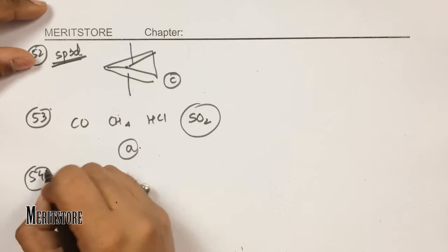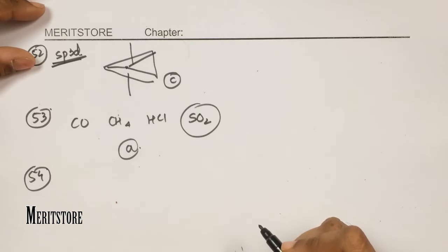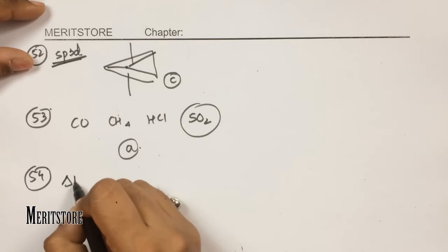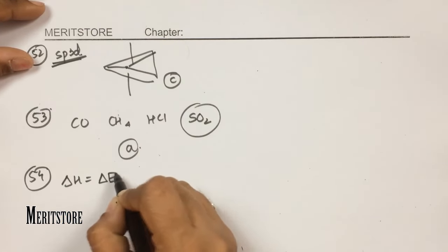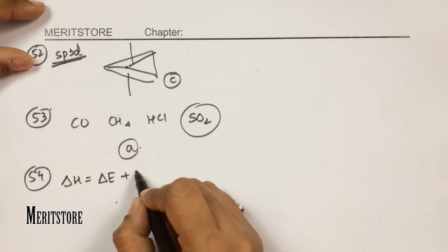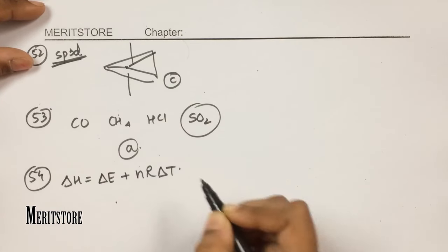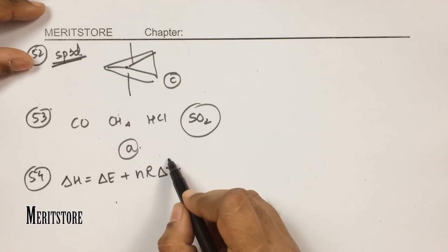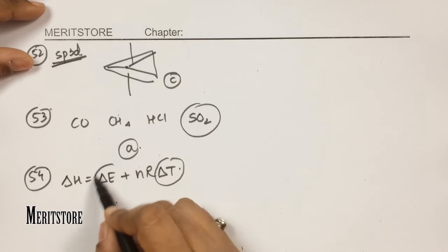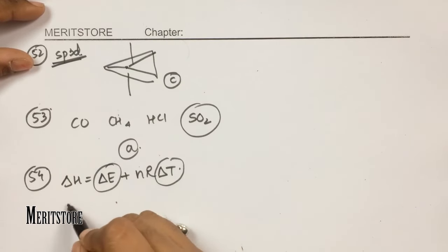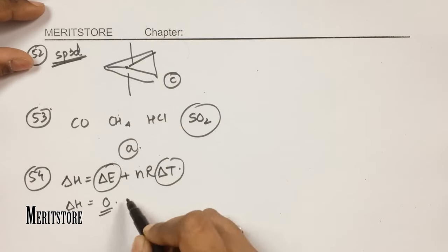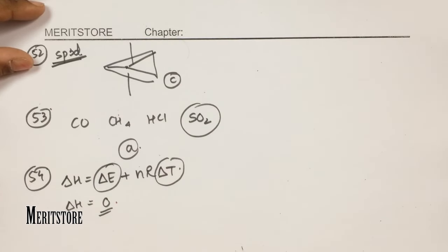Question number 54: 2 moles of ideal gas is expanded isothermally and reversibly from 1 litre to 10 litres at 300 K. We need to find the enthalpy change. Using ΔH = ΔE + nRΔT: since this is an isothermal process, ΔT = 0 and ΔE = 0. Therefore ΔH = 0 kJ, which is option D.